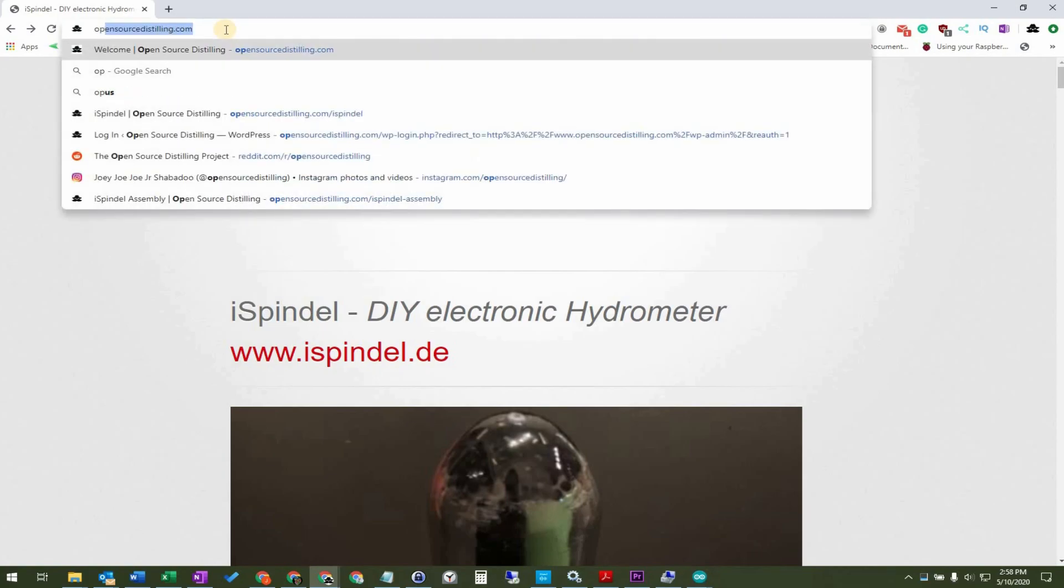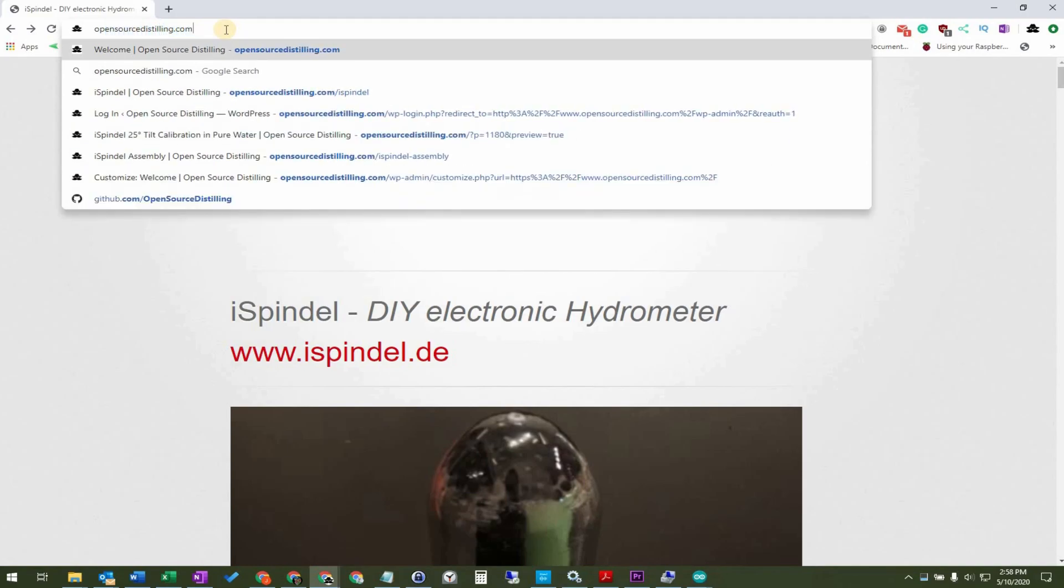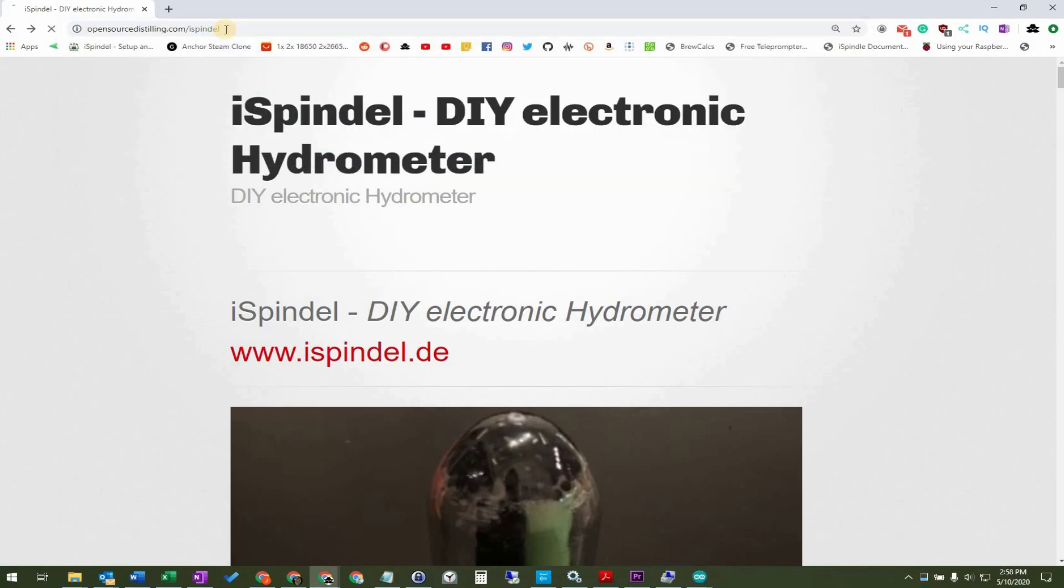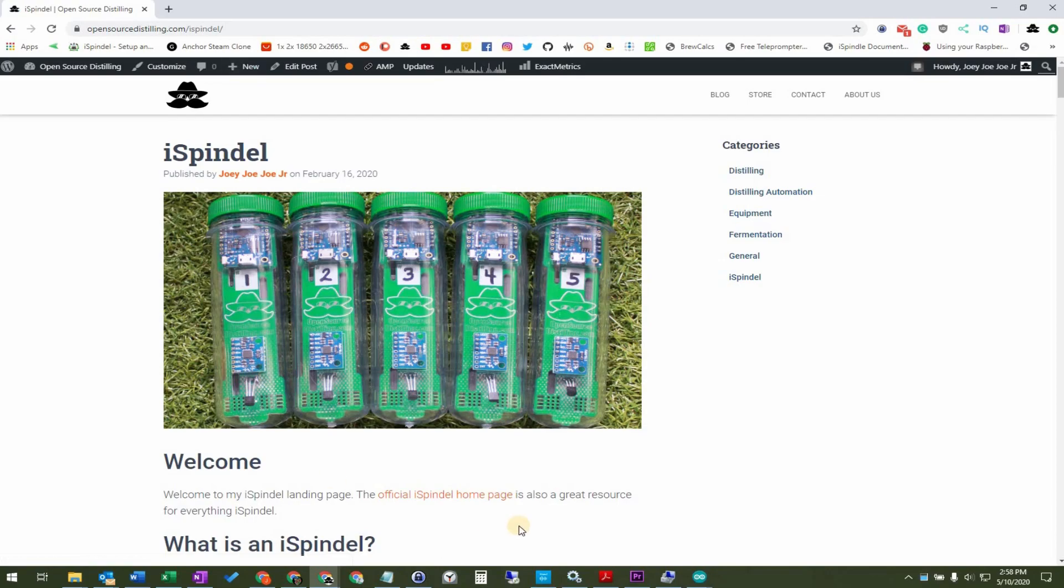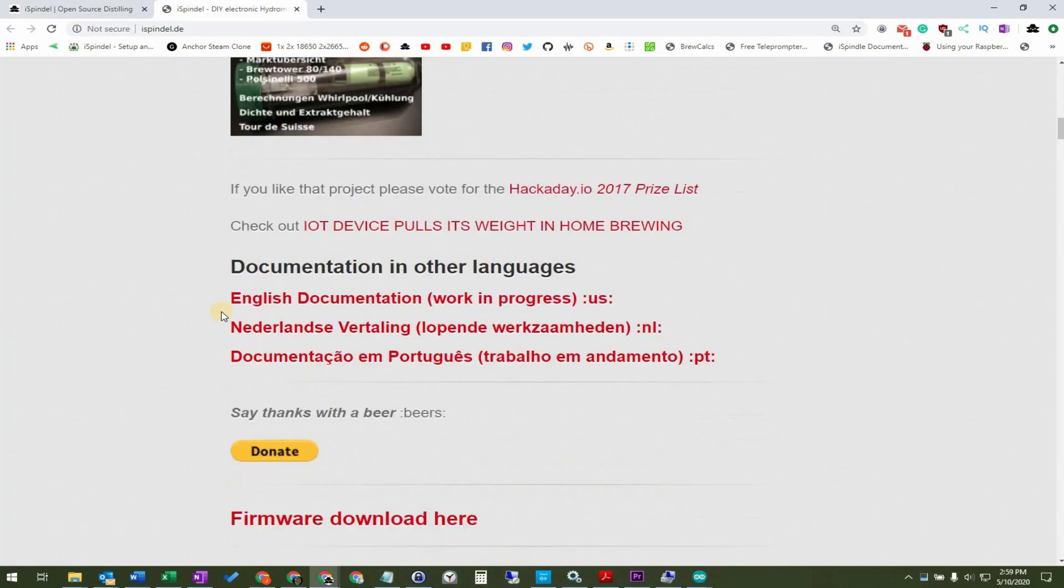You may be asking yourself why you have to do this in the first place, and let's start by coming over to opensourcedistilling.com forward slash ice spindle. Click on the link for the official ice spindle home page. Scroll down a bit and find the link for the English documentation.